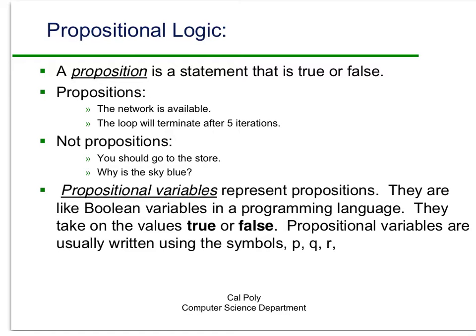In order to do propositional logic, we're going to create an algebra-like terminology. The first thing we need are what are called propositional variables. Propositional variables are just symbols that represent propositions. They're exactly like the Boolean variables you've run into in programming languages, and they take on the values true or false. Propositional variables are usually written using the symbols P, Q, and R.